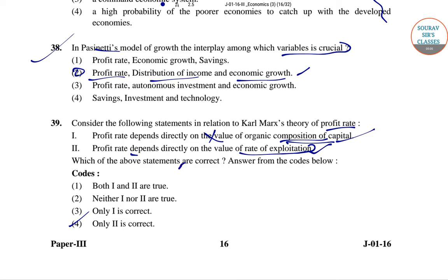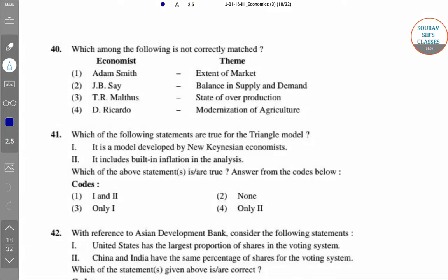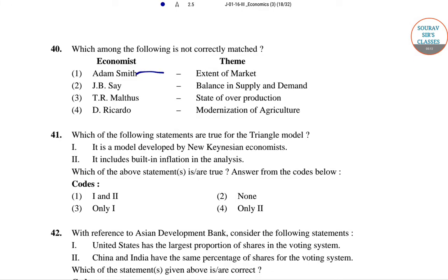Question 40: Matching economists — Adam Smith gave extent of market, J.B. Say gave balance of supply and demand, Malthus gave the state of overproduction, but Ricardo did not give this. So option 4 is the right answer for which among the following is not correctly matched.